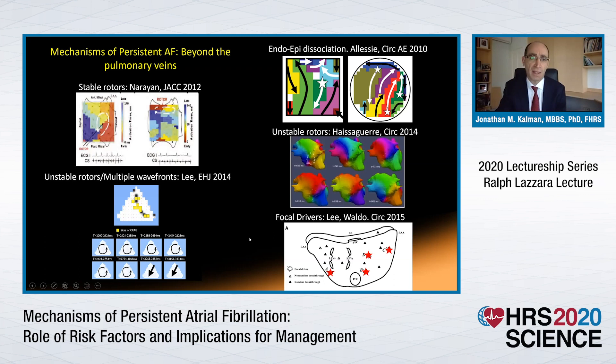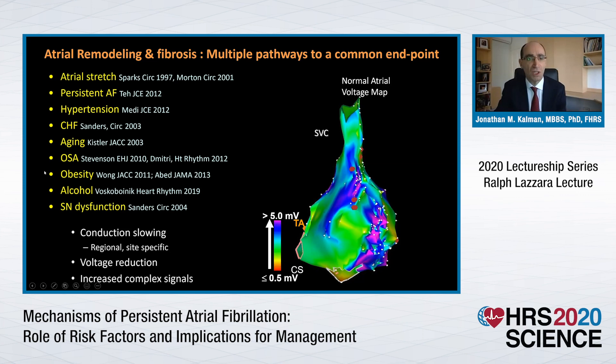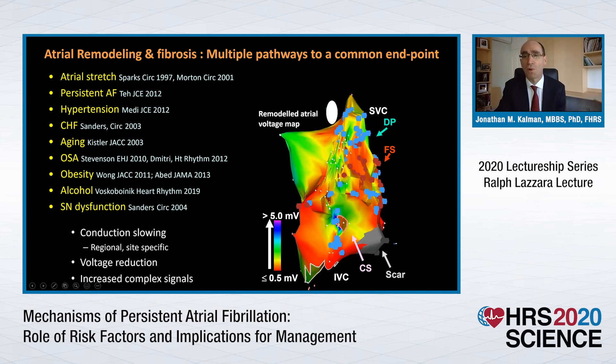Whichever mechanism is active, underlying it is the remodelling process. The various conditions that associate with atrial fibrillation — whether persistent AF itself, conditions of stretch, hypertension, heart failure, advancing age, sleep apnea, and more recently recognised obesity and excess alcohol intake — are the conditions that take a healthy atrium with the greens and blues of high voltage and turn it into a remodelled atrium, where the reds and yellows of low voltage and complex signals reflect conduction slowing and voltage reduction. These are the EP markers of what we know underlying as the substrate of fibrosis.